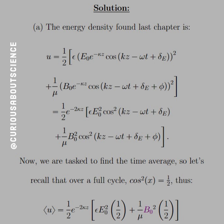If you do zero to two pi divided by two pi, you see exactly what cosine needs to be. Thus we see that we have one half E to negative two kappa Z. Clearly the epsilon and E squared term from above stays and the cosine goes to one half. Similarly, the one over mu B naught squared term stays and the cosine there goes to one half.